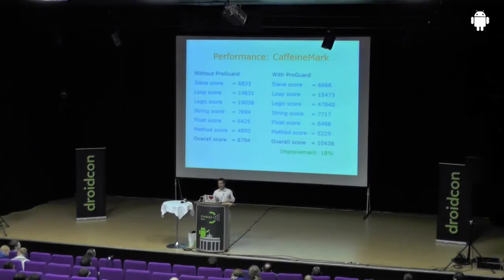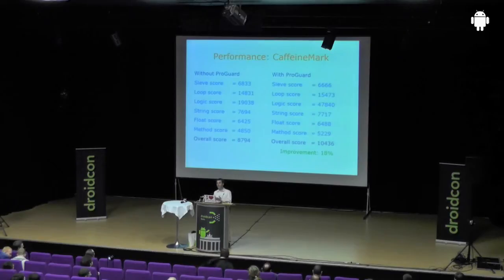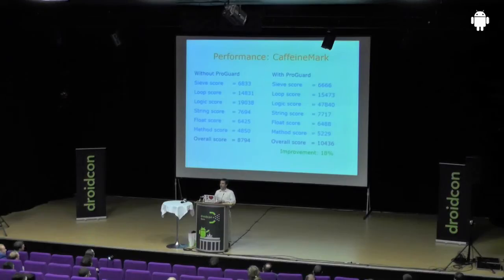On to performance — there is also an improvement in performance. For this test I've picked the Caffeine benchmark, one of many available. I picked this one because it makes ProGuard look good. If you pick a GPU benchmark or an IO benchmark, you wouldn't see much difference because ProGuard just operates on bytecode — it doesn't do anything on GPU code or graphics code or IO code. In this case, there is an overall improvement of something like 18%, which is quite typical if you have computationally intensive applications.